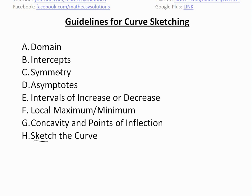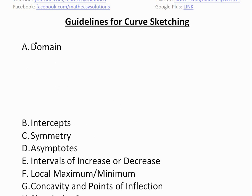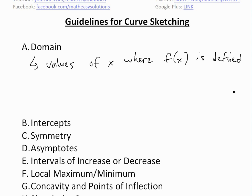Basically, you look at domain, intercepts, symmetry, asymptotes, intervals of increase and decrease, the local maximum, and then concavity and points of inflection. Now the first step, domain, is basically just the values of x where f of x is defined. This usually arises when you have values of x where it isn't defined, like something divided by zero.